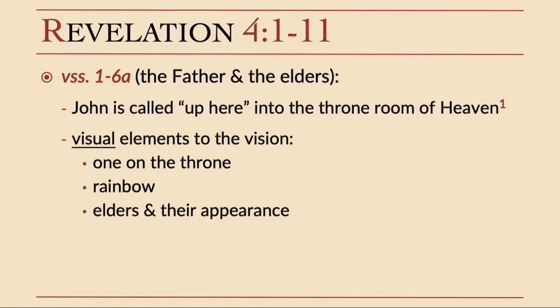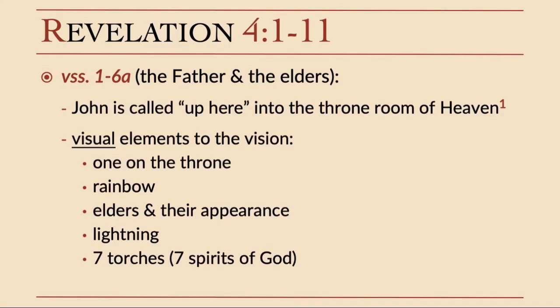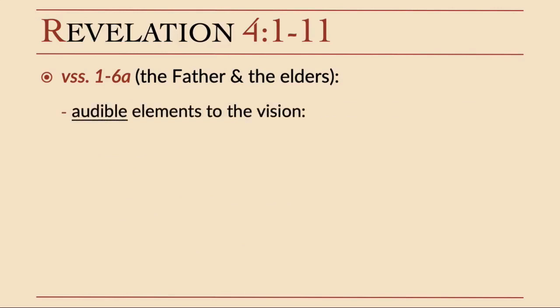Then we have the elders—24 of them, clothed in white garments with golden crowns on their heads. We have lightning flashing in the throne room, and God is associated in the Old Testament particularly with storms. There are seven torches representing the seven spirits of God—that's the Holy Spirit. The number seven again represents perfection. And before the throne is something like a sea of glass. So we see the one on the throne, the rainbow, the elders, the lightning, the seven torches, and the sea of glass. But it isn't just visual elements—there are audible elements to the vision as well.